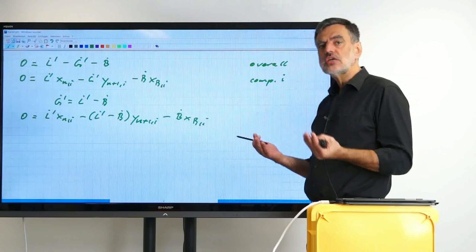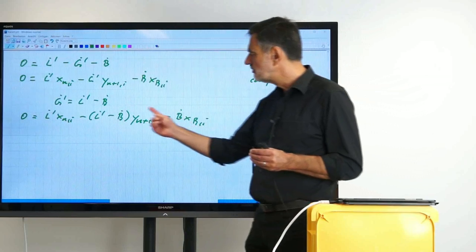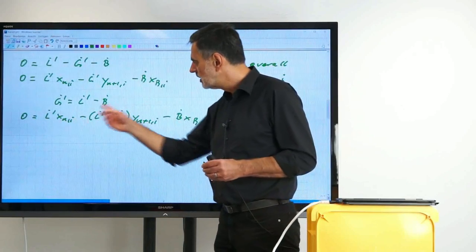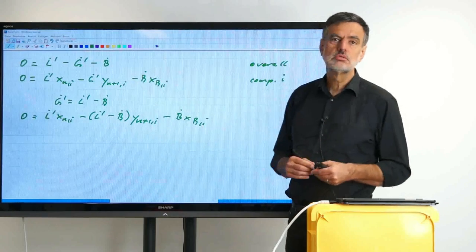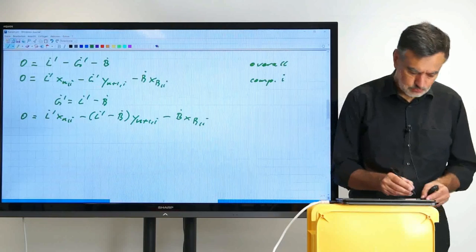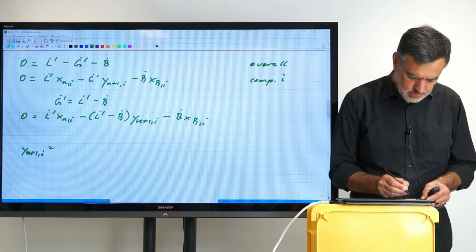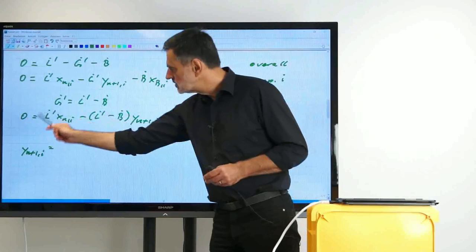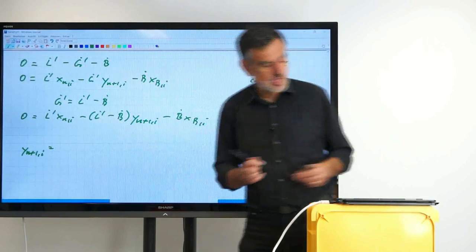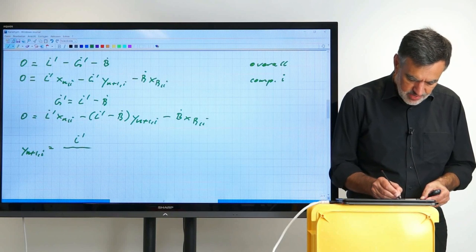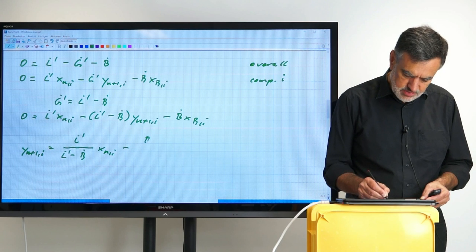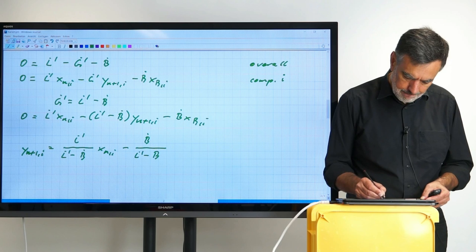We see that we can achieve a similar equation as for the rectifying section. We can solve now for the Y_N+1, so we have to bring that to the other side of the equal sign and divide by this bracketed term. Then we get Y_N+1,i equals L dot prime divided by (L dot prime minus B dot) times X_Ni minus B dot divided by (L dot prime minus B dot) times X_Bi.